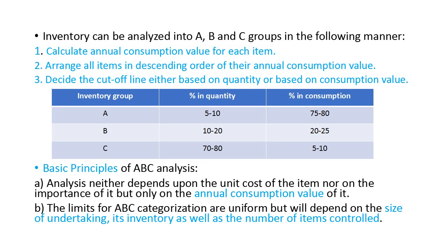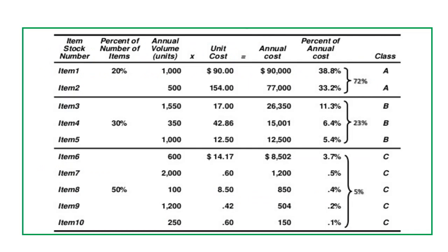To calculate ABC classification: first calculate the annual consumption value for each item, arrange them in descending order of annual consumption value, then decide the cutoff either by quantity or by consumption value. In an example with 10 drugs, the annual consumption value is calculated by multiplying annual volume in units by unit cost, then percentages are calculated. The first two items alone account for 72% of consumption value, the last five items only 5%, and the middle three 23%.